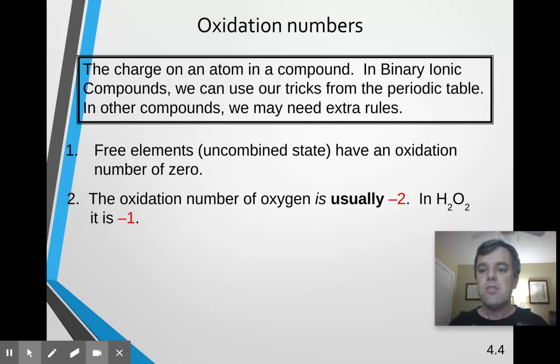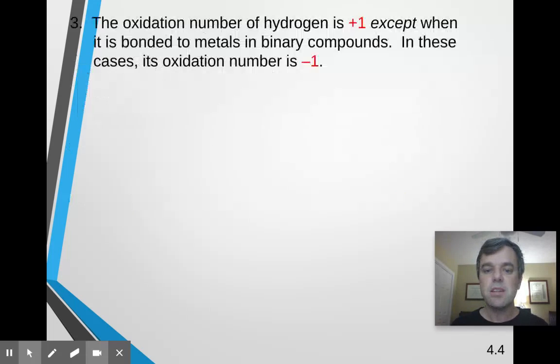Oxygen usually has an oxidation number of negative 2. But in H2O2 and other peroxides, it's negative 1. And a peroxide is going to be something with anything in group 1, including hydrogen, combined with oxygen. And it goes in a 2 to 2 ratio like that, typically.